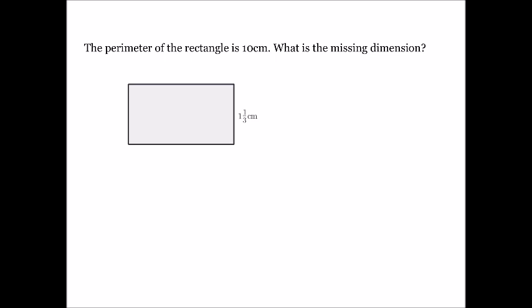Welcome back to the final part of this lesson. We're going to do a plenary to assess our understanding by combining fraction skills with geometry — specifically the perimeter of a rectangle. The question says: the perimeter of the rectangle is ten centimetres. What is the missing dimension? One length is given as one and one third centimetres. Pause the video and give it a go.